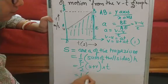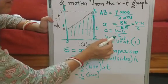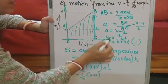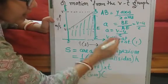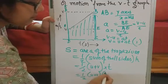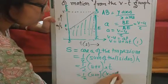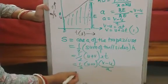So it is half u plus v. And instead of t, from here I can write v minus u by a. So I have just taken it, sorry. It is v minus u by a.